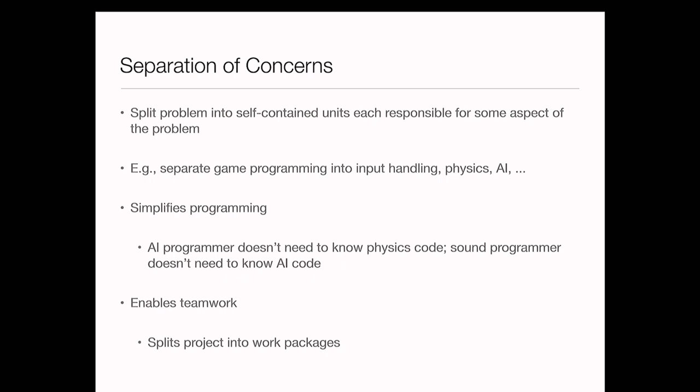In a modern game engine, all of these things are separated into separate components. This simplifies creating the game from the game creator's point of view — creating the actual components is still very hard, but it simplifies programming. The people working on individual components don't necessarily need to know about other components. People working on AI probably don't care about sound; people working on sound probably don't care about physics. And once you split everything up into separate concerns, this lets individual teams work on all the separate components.